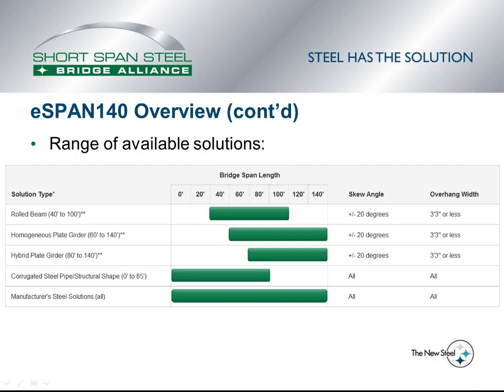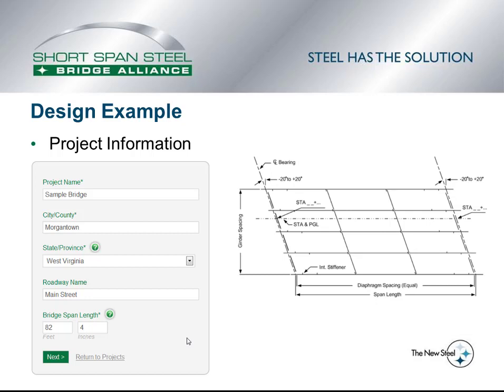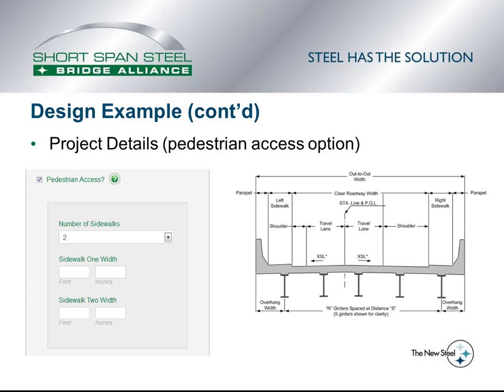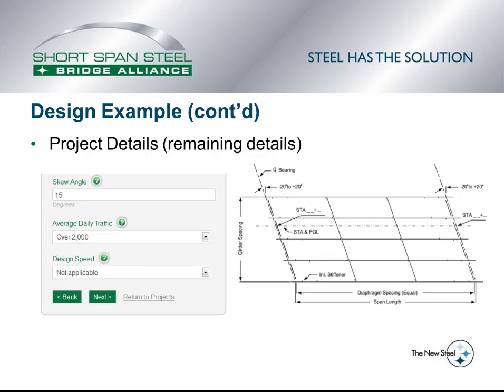eSpan 140 will give solutions within the available range. For instance, for a 100-foot span, it would give solutions for a rolled beam girder bridge, a homogeneous plate girder bridge, and a hybrid plate girder bridge. To define the bridge, you enter the span length, width, and number of lanes. More specifically, you name the bridge, enter the span length, number of lanes, roadway width, parapet information, overhang information, sidewalk widths if applicable, skew, and average daily traffic for fatigue considerations. At that point, eSpan 140 produces solutions.